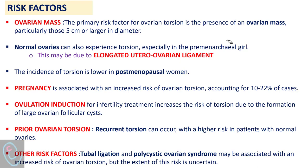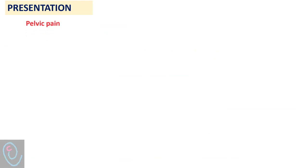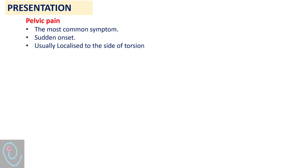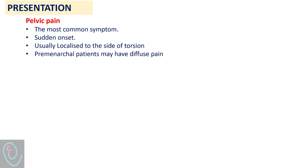However, the extent of this risk is uncertain. Regarding presentation, pelvic pain is the most common symptom of ovarian torsion, characterized by sudden onset. It is usually localized to the side of torsion; however, it may be diffuse, especially in pre-menarchal girls.